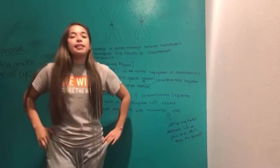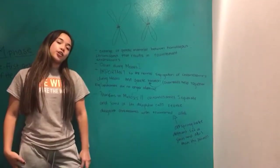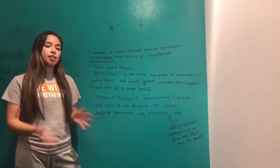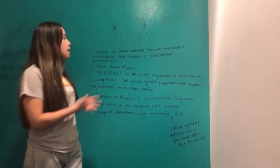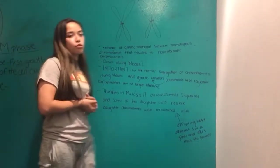Hi, my name's Alexa, and today I'm going to be talking to you about crossing over. Crossing over occurs in meiosis I, and it is basically the exchange of genetic material between homologous chromosomes that results in recombinant chromosomes.